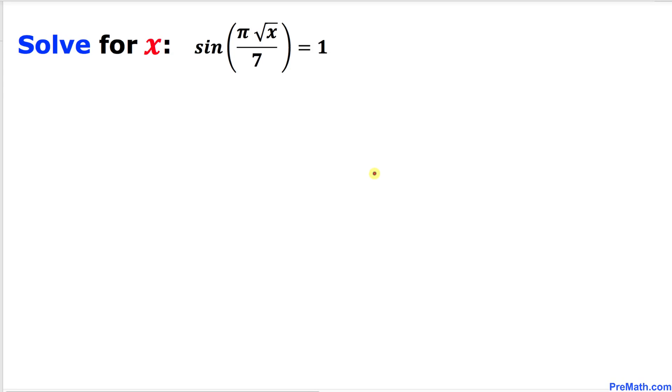Welcome to PreMath. In this tutorial we have this trigonometric function: sine of pi square root of x divided by 7 equals 1, and now we are going to solve for x.